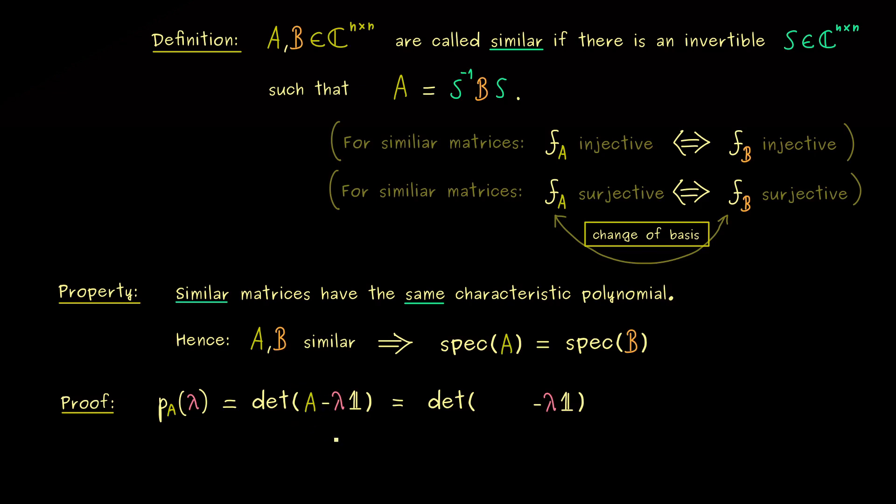And now, in the next step, we can simply put in the similarity definition here. This means, instead of A, we now write S inverse BS. And then, in the next step, the only thing we have to do is to rewrite the identity matrix as S inverse times S.